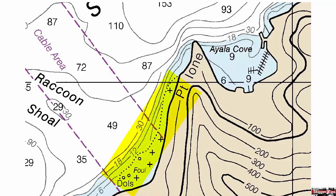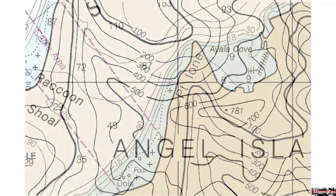Dolphins, which are pilings that have been lashed together, are shown along with foul ground. Stay clear of this area to avoid damage to your keel, rudder, or propeller.